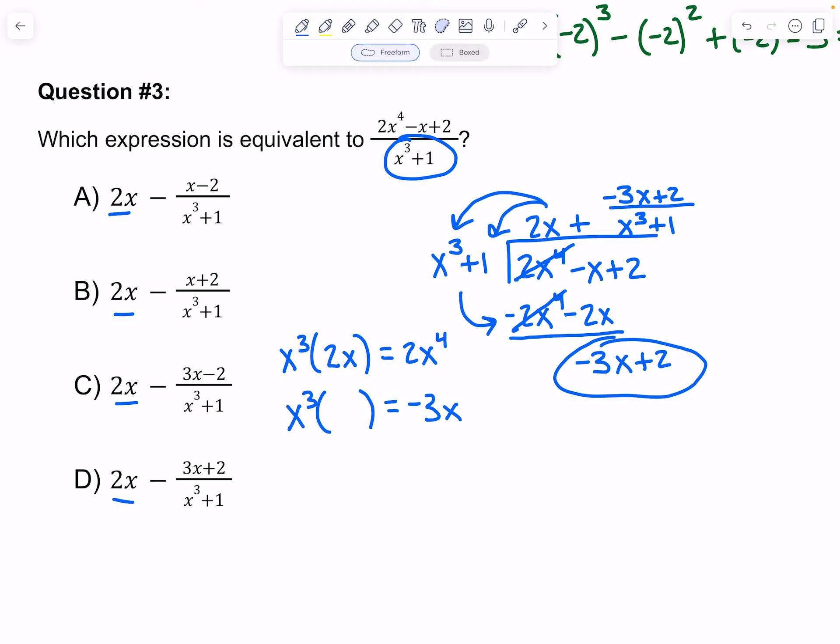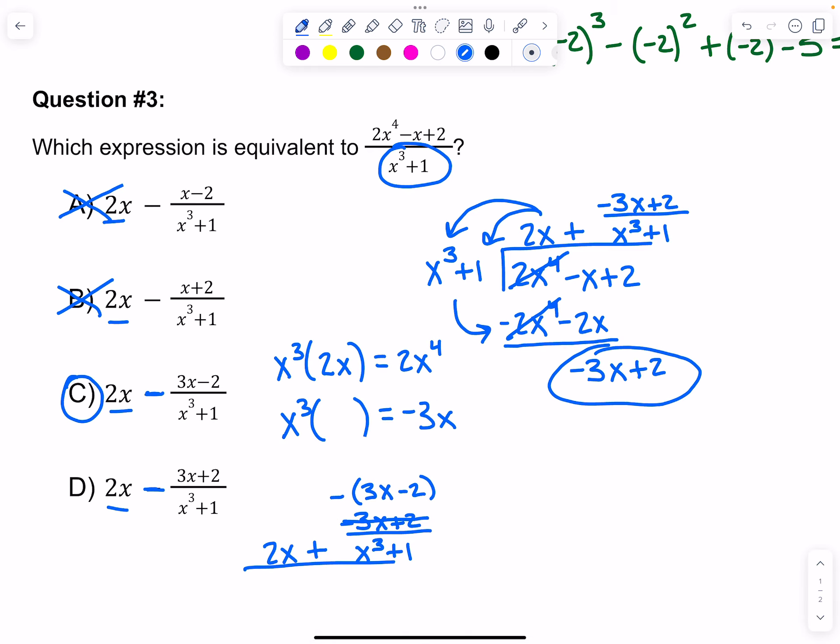They've tried to be tricky. We know it is not A or B, so we can cancel those out. But if you notice, they've put a minus sign in between here, so we would have to factor out a negative from our numerator, change those signs, and then that looks like C is the best answer.